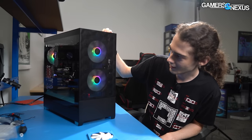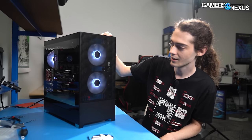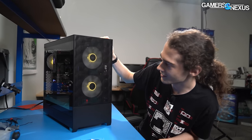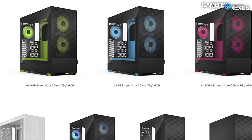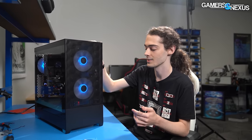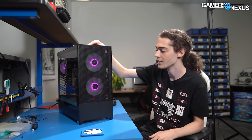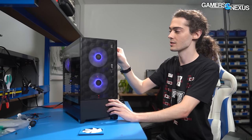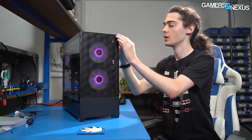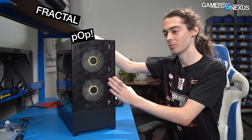We can plug it in and cycle through modes using the RGB control button. You might notice as I'm cycling through that I have rainbow, a couple of color pairs, but I don't have any solid cyan option. This case comes in cyan, magenta, green, and orange, but we don't have solid color options for any of those. When building this I wanted it to match the renders online, but I wasn't able to do that. You can plug the header into your motherboard and sync through your RGB software, but we'd like to see a baked-in color that actually matches the case for these Fractal Pop Air RGB units.